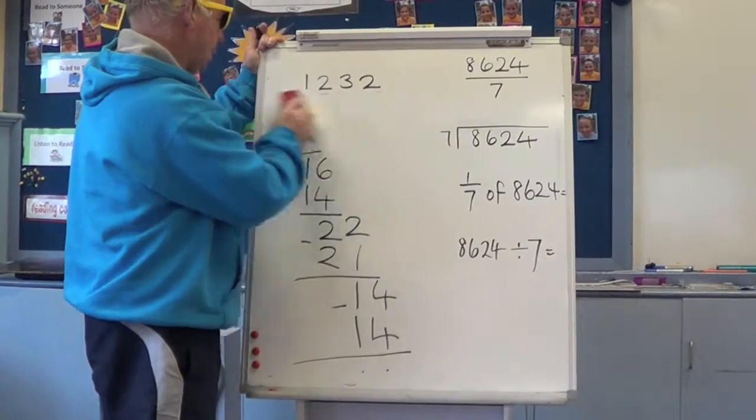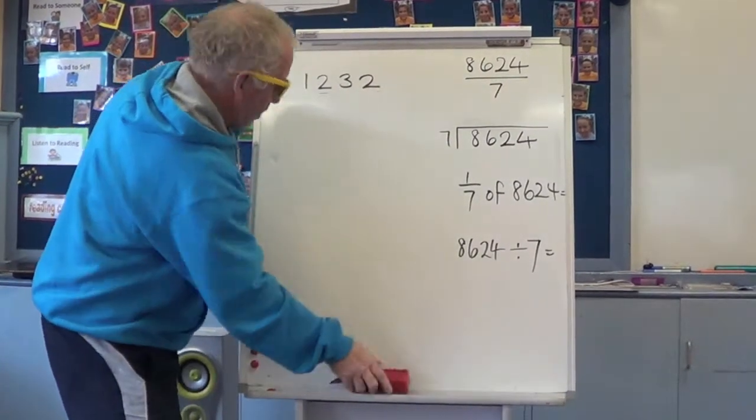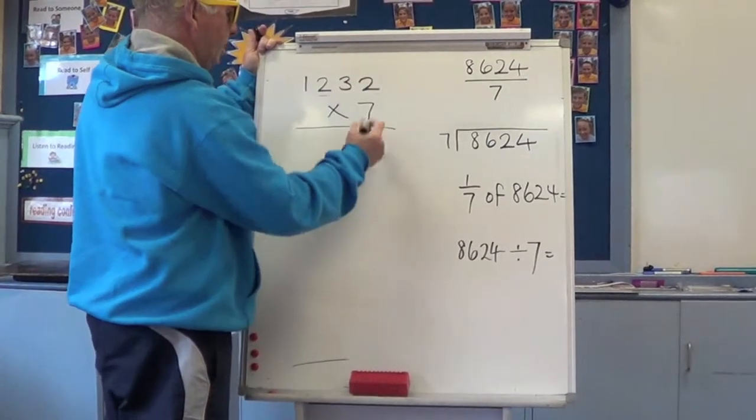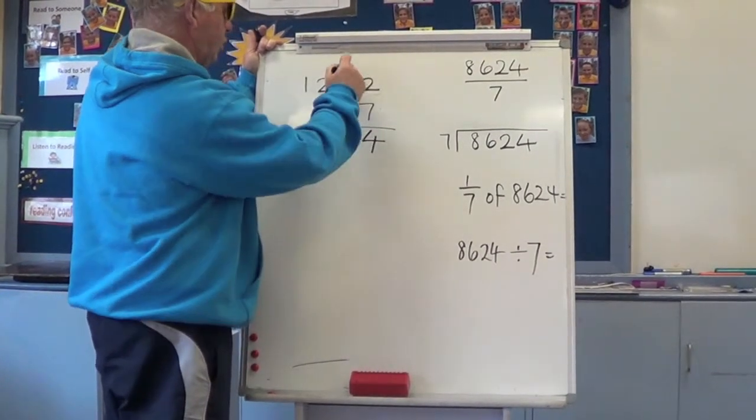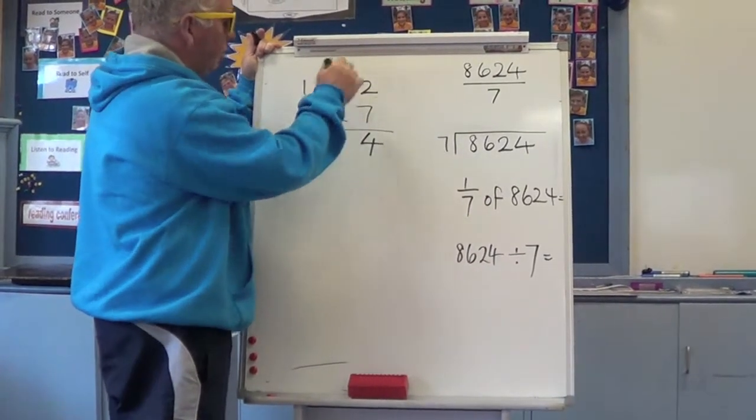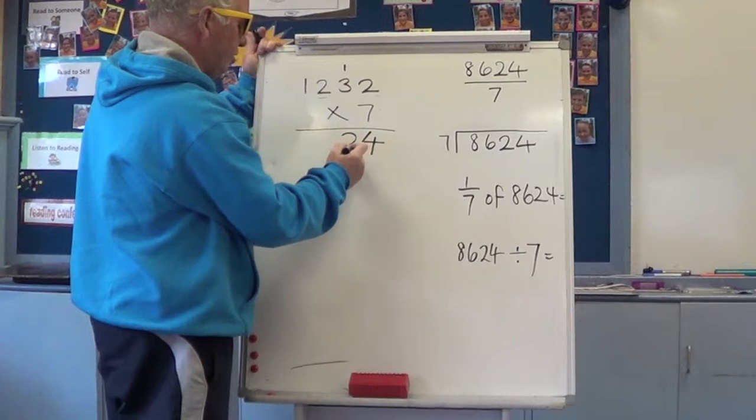1,232 multiplied by 7. And let's see what we get. 7 times 2 ones is 14 ones, write the four, carry the one ten. 7 times 3 tens is 21 tens, plus one more is 22 tens, which is 2 tens and 200.